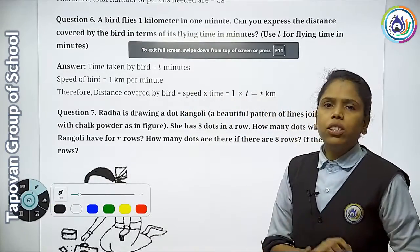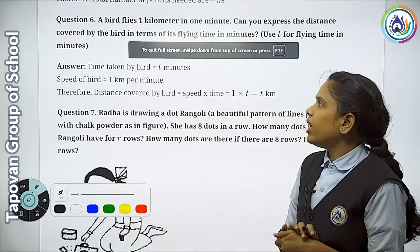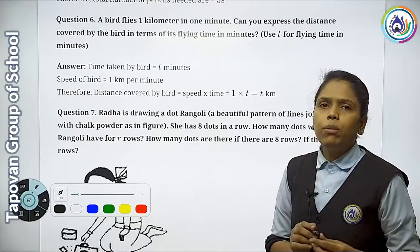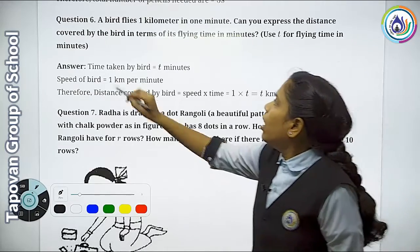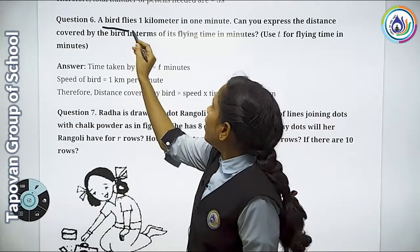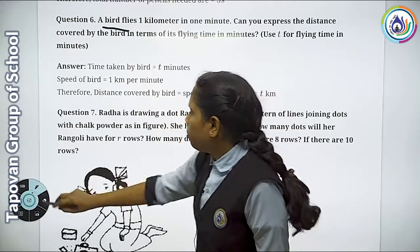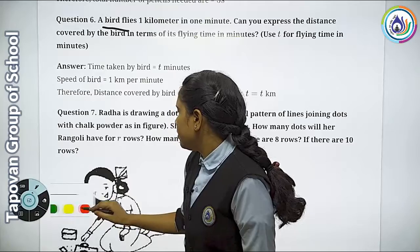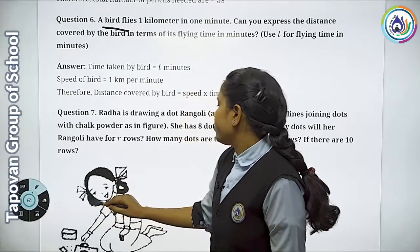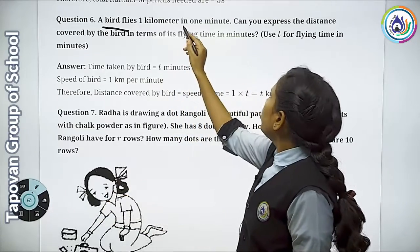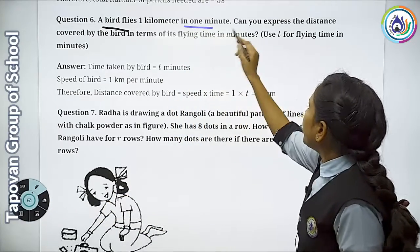We are going to see Question No. 6. In the last video we had seen up to Question No. 5. A bird flies a kilometer in one minute.